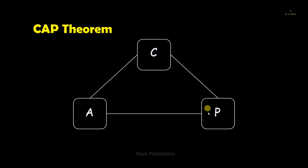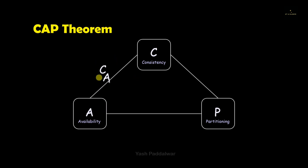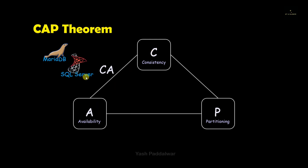Now concentrate on this particular triangle containing three nodes: C, A, and P — where C stands for consistency, A stands for availability, and P stands for partitioning. This edge containing nodes C and A represents consistency and availability. The data models that support these two properties from the CAP theorem are MariaDB, SQL Server, and many other data models. But note that these are not network shared systems — they are only relational database systems which do not support partitioning at all.